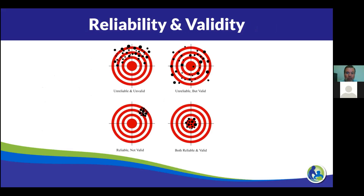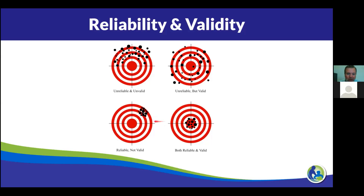This graphic is really helpful for understanding reliability and validity. Reliability means you're getting very repeatable, consistent data — two of these targets show reliable data. One of them is also valid, hitting the bullseye, and one is not. Another target shows that if you averaged all the shots together you'd be getting valid data, but it's not reliable — not consistent or repeatable.